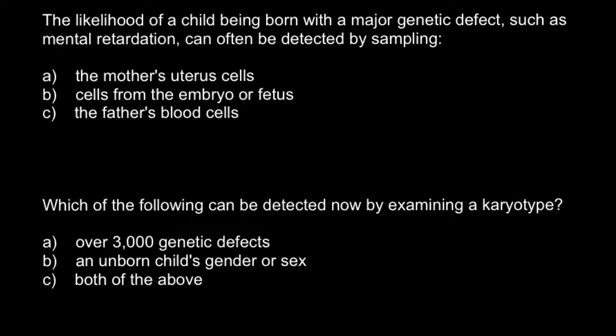Of course, not all components of the blood have DNA. For example, red blood cells — one of the major components of the blood — don't have a nucleus and therefore don't have DNA, so we cannot use these cells to find what might cause a genetic disorder. The only correct answer here would be Answer B: we can use cells from the embryo or fetus in order to find what causes a genetic disorder by sampling, and this process is called amniocentesis.